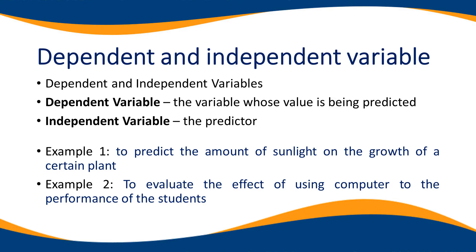Example number two is to evaluate the effect of using a computer on the performance of students. The independent variable here is using a computer, and the dependent variable is the performance of the students. Ang predictor natin dito ay yung using computer, and the outcome — yun yung tinatawag na dependent variable — which is the performance of the students.